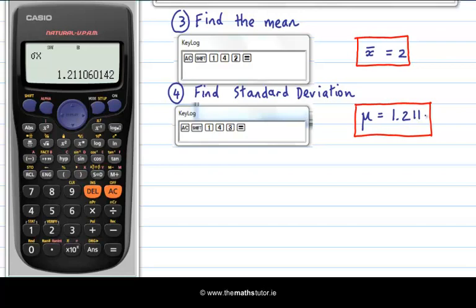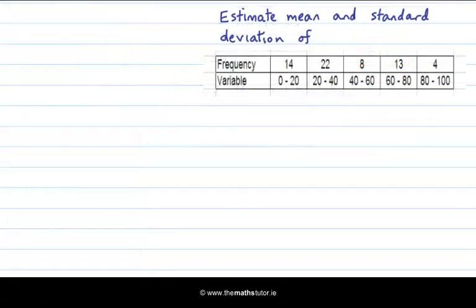Now I just want to show one more example what you would do in the following situation. In this example we are asked to estimate the mean and the standard deviation of this frequency distribution. Now what's different about this frequency distribution is that the variables are intervals as you can see here.